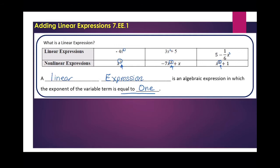Now linear means that when you graph it on a coordinate plane, you're going to get a line — hence the name linear. It doesn't have to be perfectly horizontal, it just has to be straight. That's all linear means: it has to be something that forms a line or a line segment.